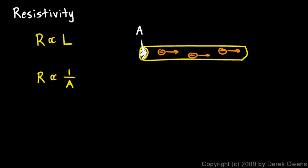We can take those two ideas and combine them. Resistance is proportional to L and resistance is proportional to 1 over A. Those two ideas together can be written as resistance is proportional to L over A, which is the same as saying it equals some constant times that.